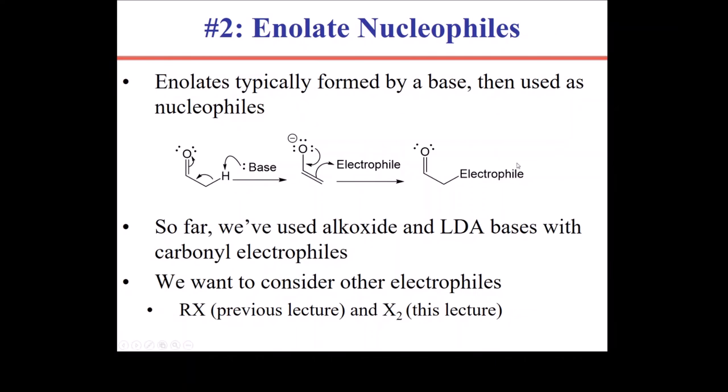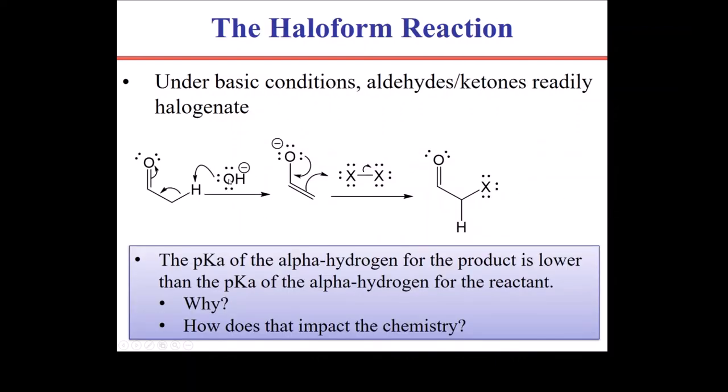Second topic. In a previous lecture, I talked about how a base could deprotonate the alpha position to produce the enolate, and then that enolate would unload into an electrophile. We used alkyl halides as that electrophile, and now we're going to look at using molecular halogens as that electrophile. In the presence of a base, we form the enolate. The enolate then attacks your molecular halogen, and we now have an alpha halo aldehyde or ketone. And this is the same product that you would get if you did it under acidic conditions as well. The basic conditions are faster, but you present a problem.